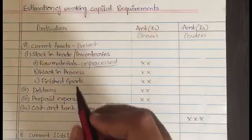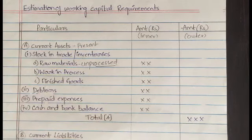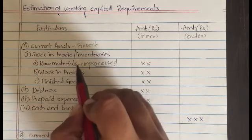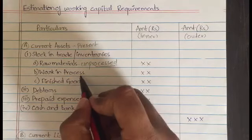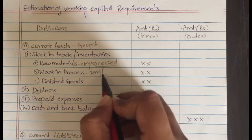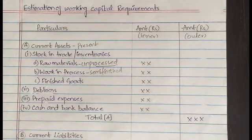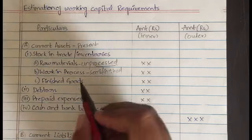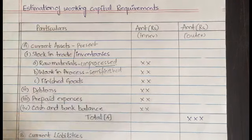After that is finished goods — goods whose production or manufacturing is completed and which are ready to be sold. So in stock in trade we have three subcategories: raw material, which is the very first stage of unprocessed things; work in process, also called semi-finished goods, which are in process; and finished goods, whose processing is completed. The second category in current assets is debtors — those are actually the customers.